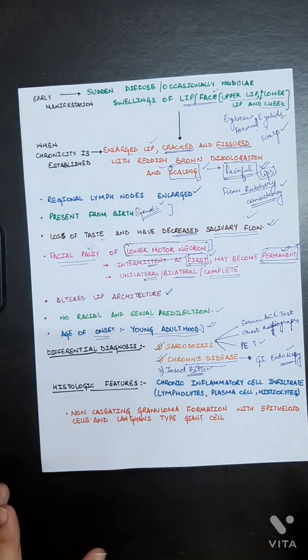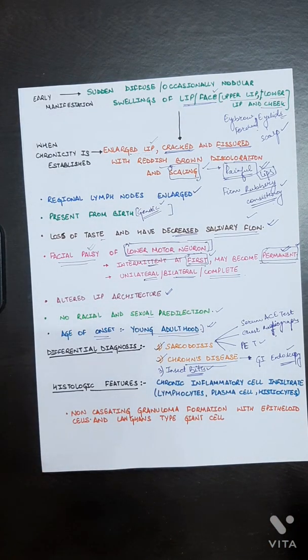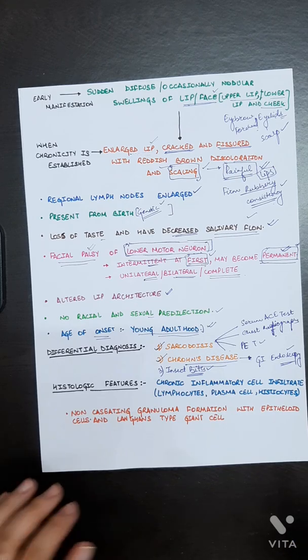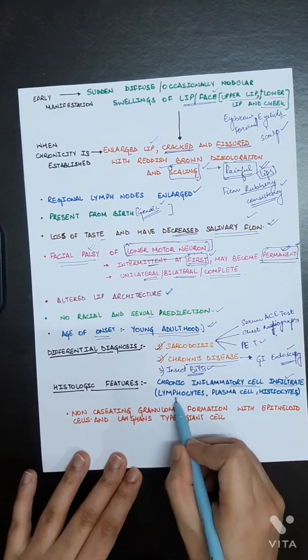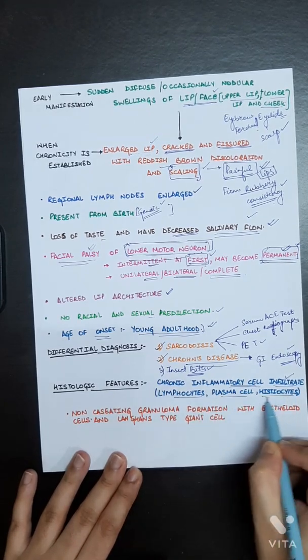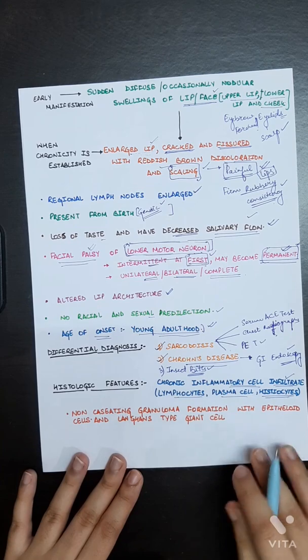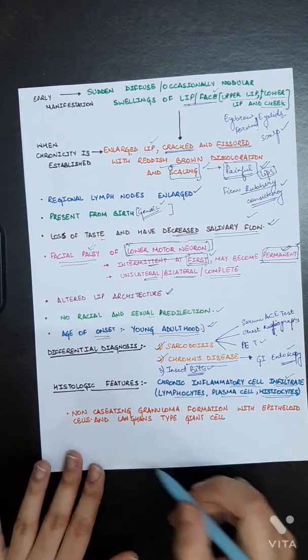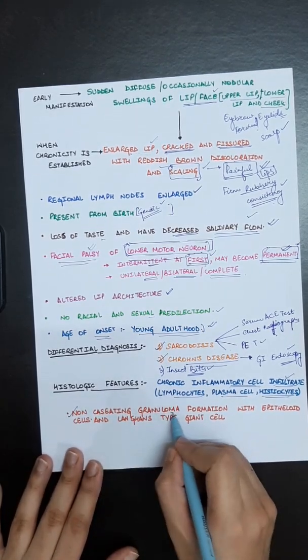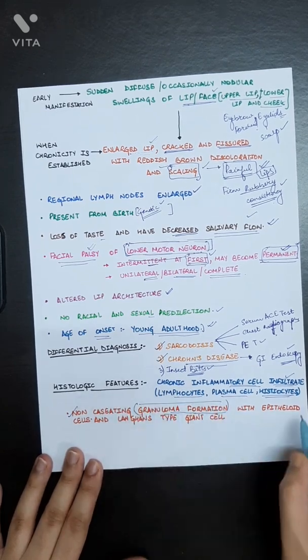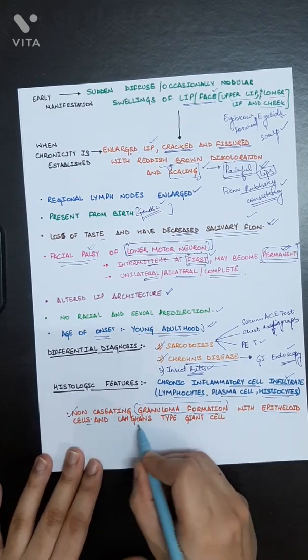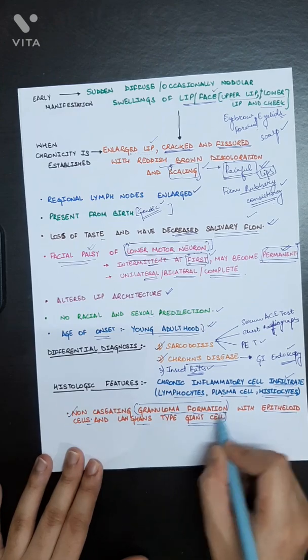Now histological features of cheilitis granulomatosa. This is basically an inflammatory disorder. Chronic inflammatory cells infiltrate are seen - lymphocytes, plasma cells, histiocytes are seen in the histological slides. Non-caseating granuloma formation will be there with epithelioid cells and Langerhans type of giant cells.